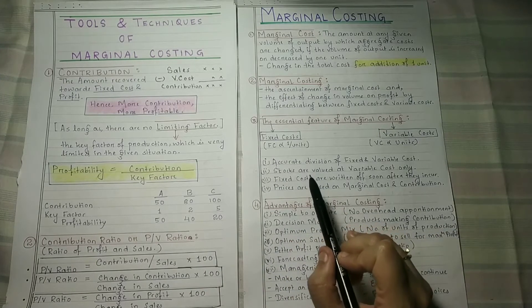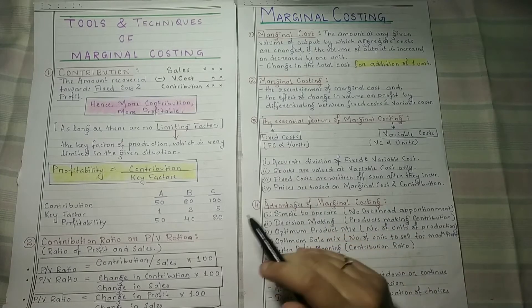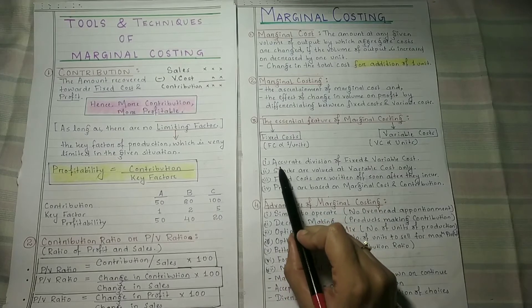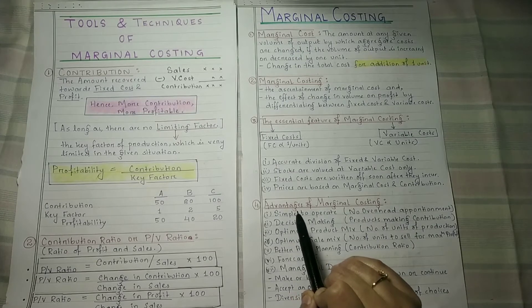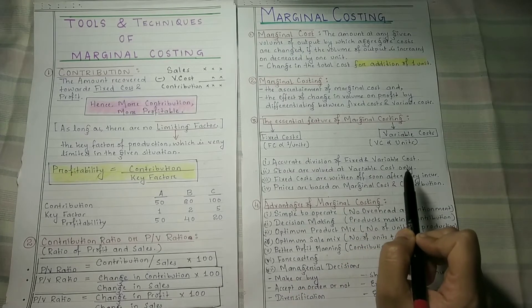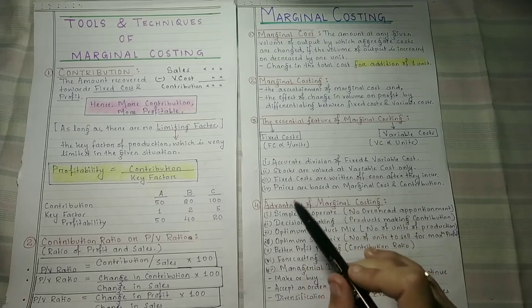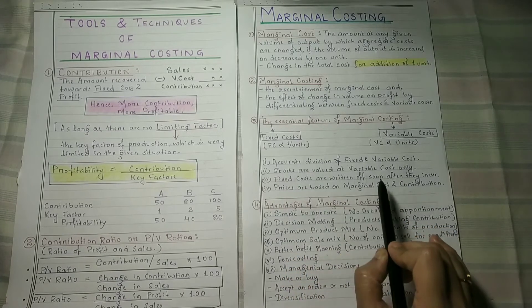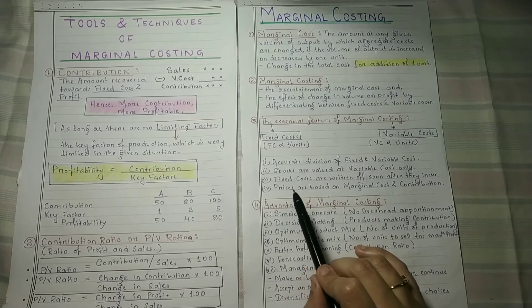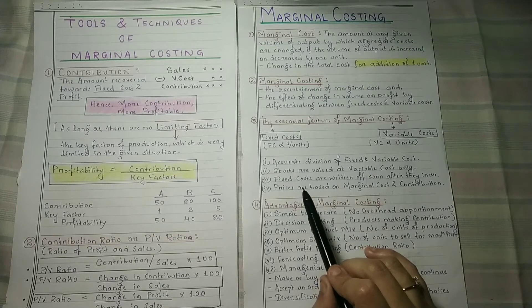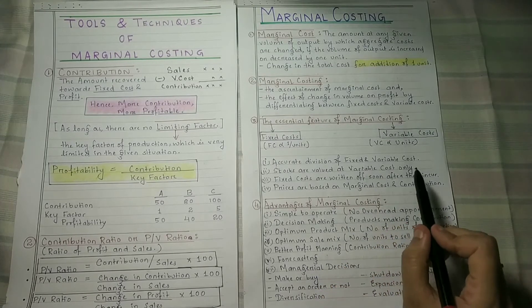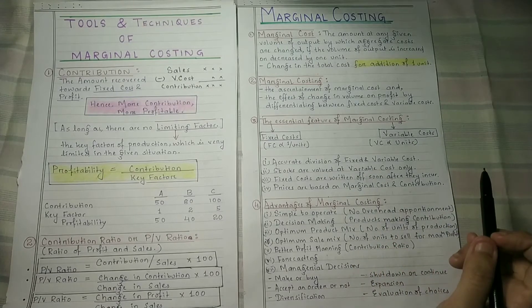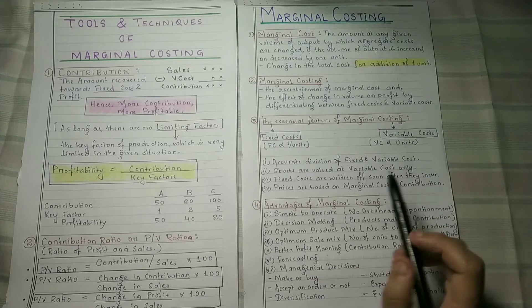As I told you earlier, in marginal costing we segregate total cost into fixed and variable cost. So the first characteristic is accurate division of fixed and variable cost — we accurately divide fixed and variable cost when doing marginal costing. The second point is that stocks are valued at variable cost only. Work-in-progress, finished goods stock, and raw material stock — all their valuation is done on the basis of variable cost only.